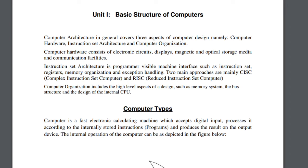What is a computer? A computer is a fast, electronic, calculating machine which accepts digital input. It processes it according to internally stored instructions. Basically, what we do is we instruct — we tell the computer what to do, so it does not work unless we do something about it.